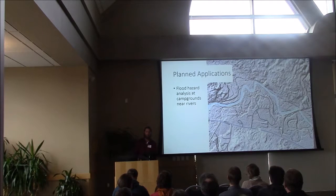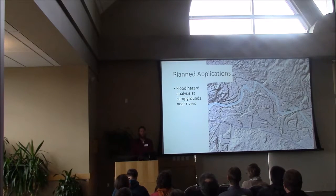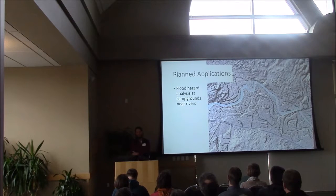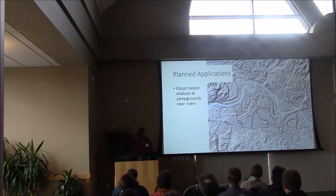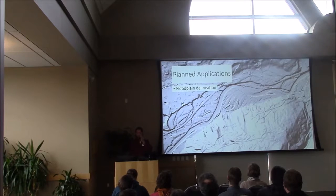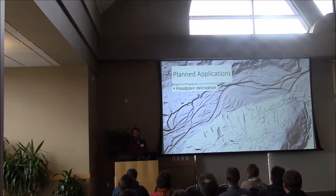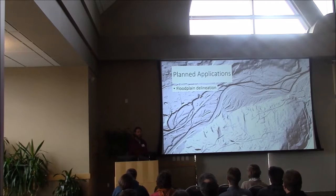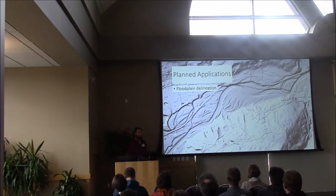We also have a pending contract with the USGS to do flood hazard analysis at campgrounds that are in or near floodplains. We have six different campgrounds that are in potential hazard zones. This is the Passaconaway campground off the Kancamagus Highway — this is the Swift River — and you can see some evidence of floodwaters that have moved right through the middle of the campground at some point in time. We're also looking at more general floodplain delineation, using the LiDAR data to create flood maps, since we don't really have FEMA-mapped floodplains very commonly in the forest. This gives us an actual measurement of where the 100-year floodplain is.